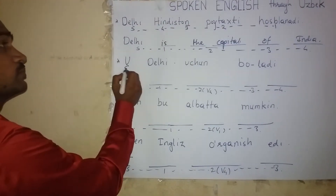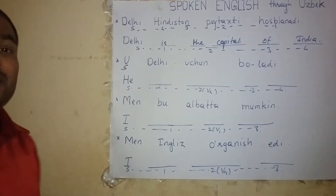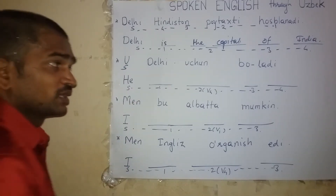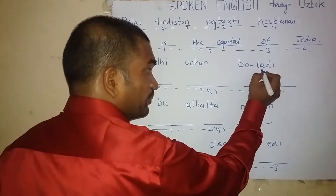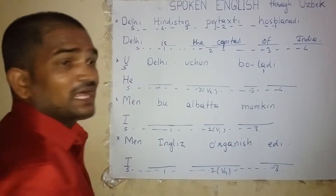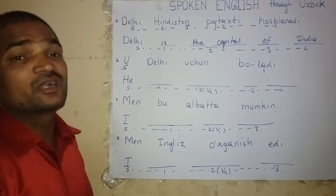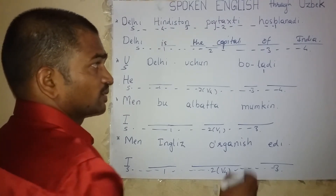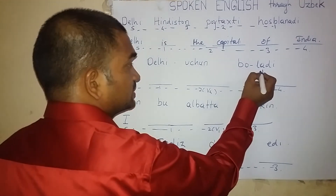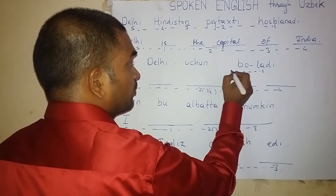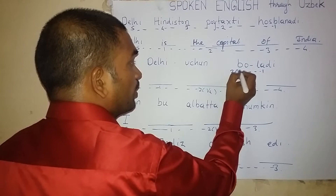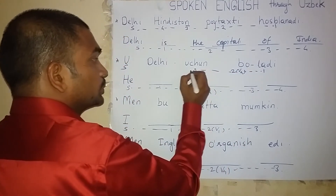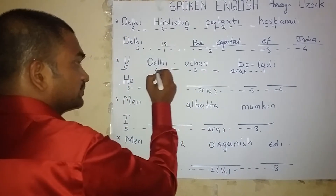The English word for 'who' — He. At the end of the sentence there is ladi. The English word for ladi is 'is.' He is. The word for Bo is 'going to Delhi.'